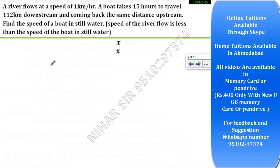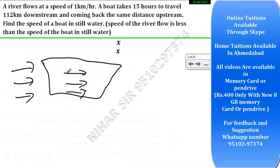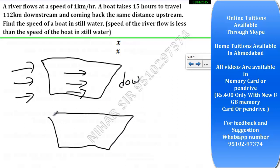Now what is downstream and upstream? I explained earlier but let me explain again. Downstream means suppose you have a boat going in one direction, and the water is also going in the same direction — that is, the boat and water have the same direction. That is called downstream. In upstream, the boat is going in one direction but the water is going in the opposite direction.